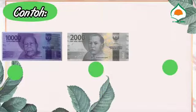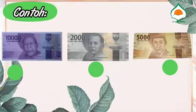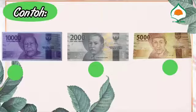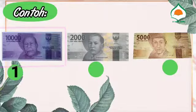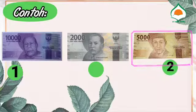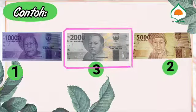Selanjutnya mengurutkan nilai pecahan uang kertas. Terdapat 3 lembar uang kertas dengan nilai 10.000 rupiah, 2.000 rupiah, dan 5.000 rupiah. Urutkan mulai dari yang nilainya terbesar: yang pertama 10.000 rupiah, kemudian 5.000 rupiah, dan yang terakhir 2.000 rupiah.